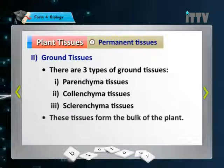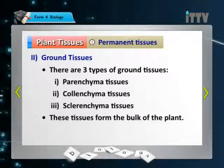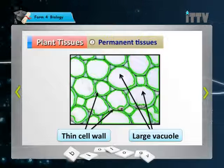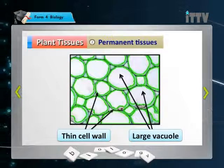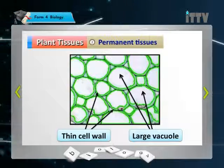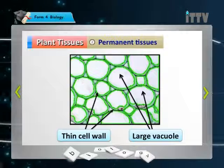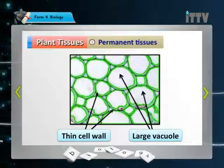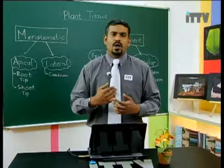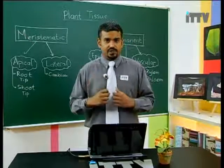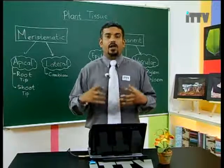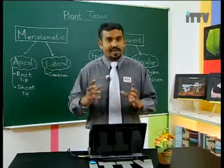These tissues form the bulk of the plant, meaning they are found most abundantly. This is an example of parenchyma tissue. Pay attention to the thin cell walls and the large vacuoles. Parenchyma tissues have thin cell walls and large vacuoles. Think of a large empty room — it's used for storage. That's the function of the large vacuole.